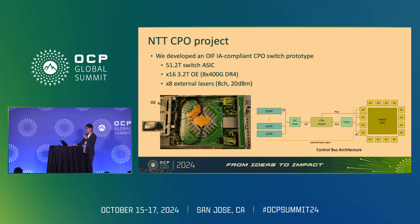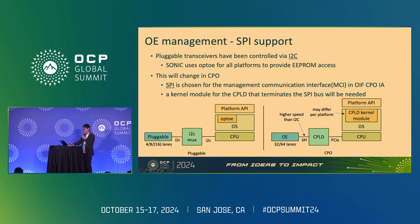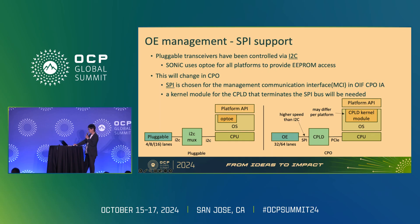Now let's go over what needs to be considered when supporting this switch with the NOS. The first challenge is SPI support. Traditionally, pluggable modules have been controlled via I2C. In SONiC, the Opti kernel module is used in conjunction with the Linux standard I2C driver for controlling transceiver EEPROMs. This will change with CPO: the OIF specification chose SPI for controlling optical engines, mainly due to performance issues — I2C was considered too slow for retrieving the large amount of information optical engines provide, such as performance monitoring. Therefore, Opti cannot be used for CPO, and a new kernel module for the CPLD must be prepared. Since CPLDs vary by platform, an abstraction layer is needed in the NOS to hide these differences.